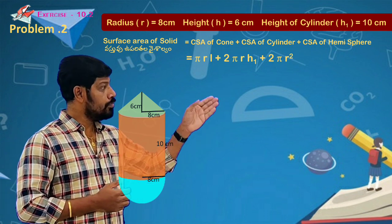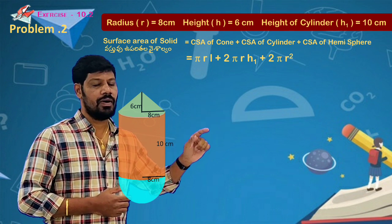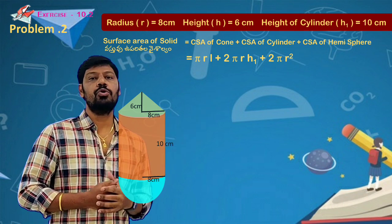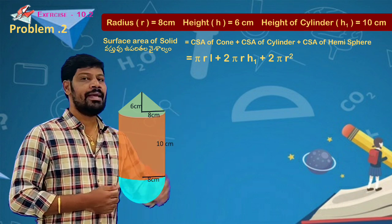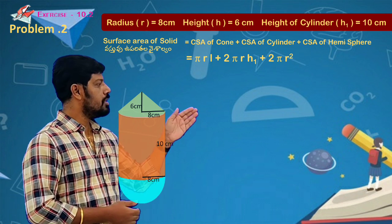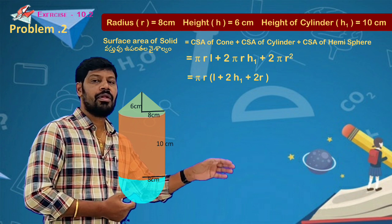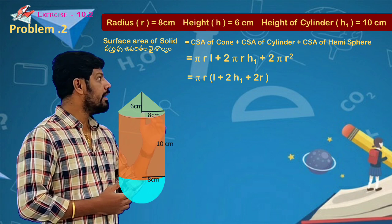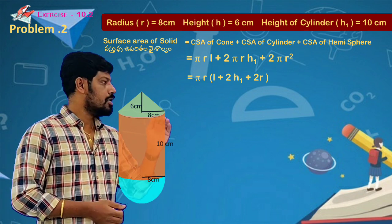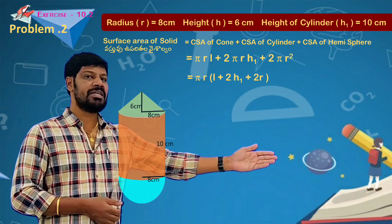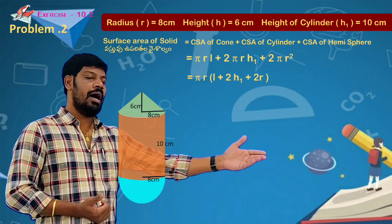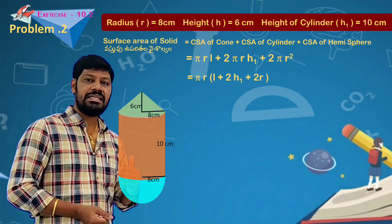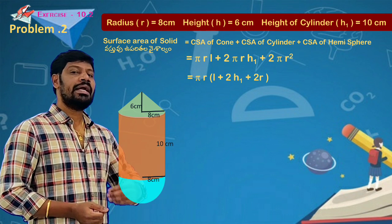Formulas: πrl plus 2πrh₁ plus 2πr². Taking πr common, we get πr(l + 2h + 2r). Since I don't know the slant height l, I will calculate it. A right triangle is formed with the height, radius, and slant height.